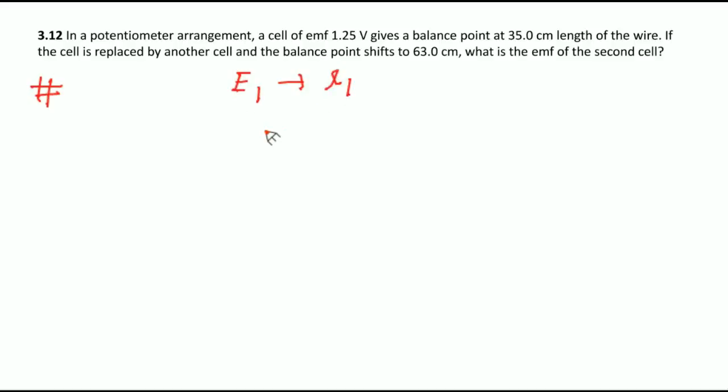First E1 balance point is L1. If replace the cell E2, then balance point shifts to L2. As you know, potentiometer gradient E is directly proportional to L. So directly you can write E1 by E2 equals L1 by L2.